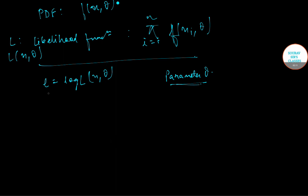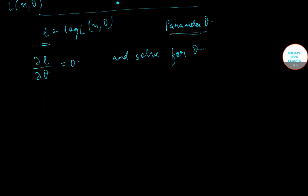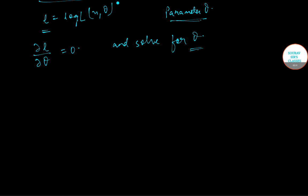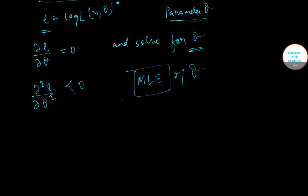Now we will differentiate l(x, theta). We will calculate del l(x, theta) / del theta and equate it to 0, and solve for theta. To check whether this really gives the maximum likelihood, we will calculate del² l / del theta², and if this comes out to be negative, we can be sure that we have got the MLE of theta, represented as theta hat.